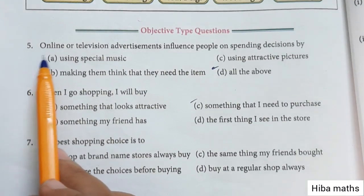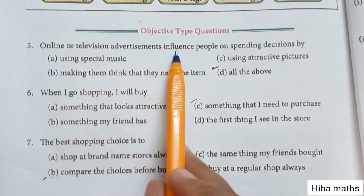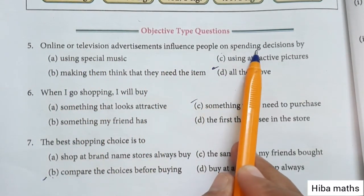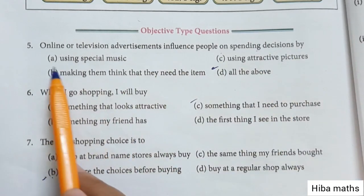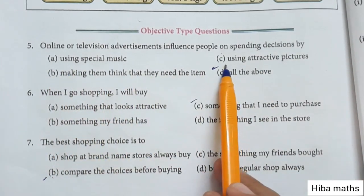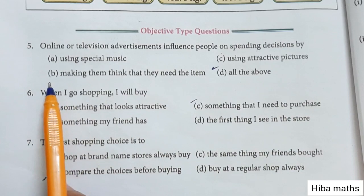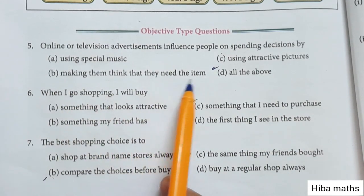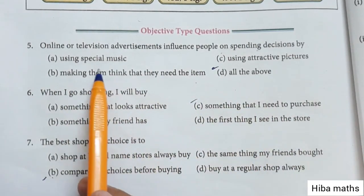5th one: Online or television advertisement influences people on spending decisions by using special music, using attractive pictures, making them think that they need the item. The answer is 3rd one — all of the above.